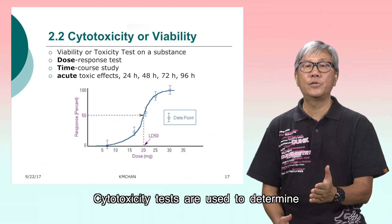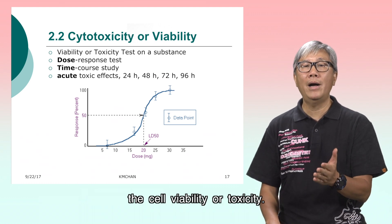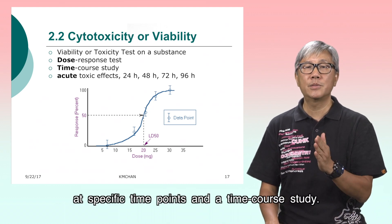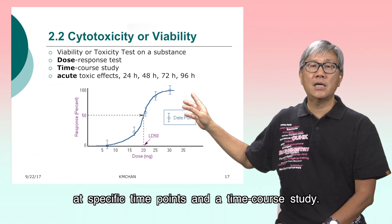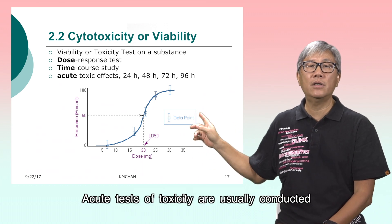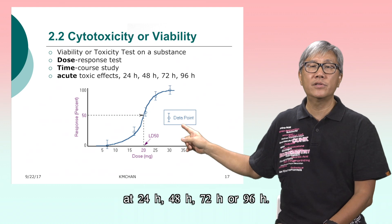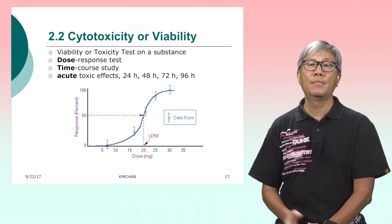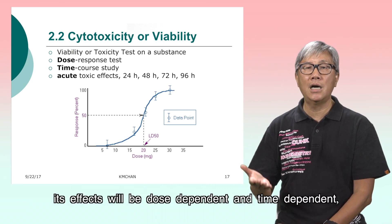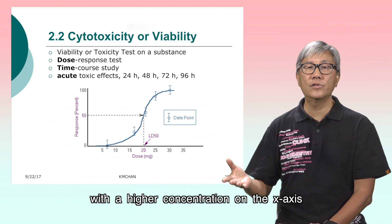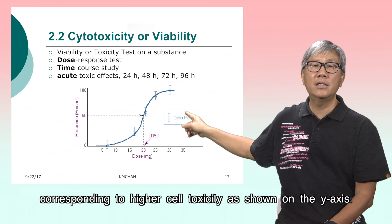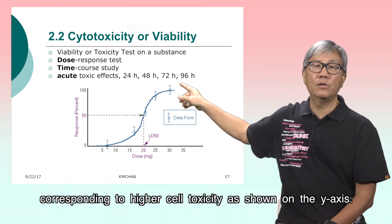Cytotoxicity tests are used to determine the cell viability or toxicity. We conduct dose-response tests at specific time points and a time-course study. Acute tests of toxicity are usually conducted at 24 hours, 48 hours, 72 hours, or 96 hours. If a substance is toxic, its effects will be dose-dependent and time-dependent, with a higher concentration on the x-axis corresponding to higher cell toxicity as shown on the y-axis.